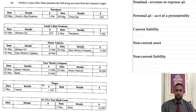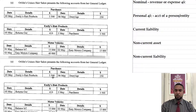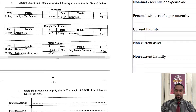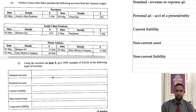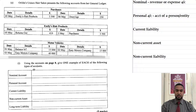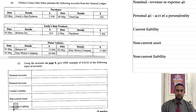Now what does the question want? You might be seeing on the right-hand side of the screen my Excel spreadsheet with some information we're going to have to fill out. It says, using the accounts on page 8, give one example of each of the following types of accounts. So we have nominal, personal, current liability, non-current asset, and non-current liability. That's five marks — basically one mark for each item.